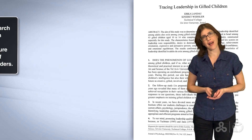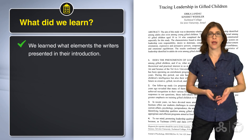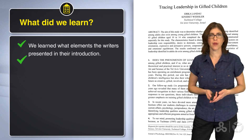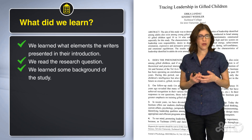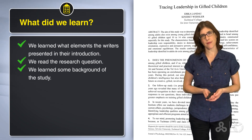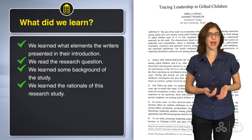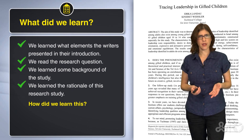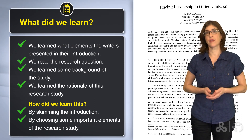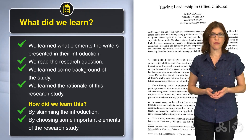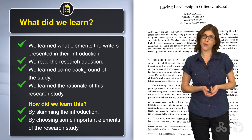We are ending our lesson. We did a lot. We learned what elements the writers presented in their introduction: research question, background literature, etc. We read the research question and saw it had two parts. We learned some background of the study — that the children took leadership courses — and we learned the rationale: how important it is that our future leaders will be able and responsible. We learned this by skimming the introduction and choosing some important elements of the research study. In the next lesson, we will read the next two sections, which deal with the method and the results. See you there.